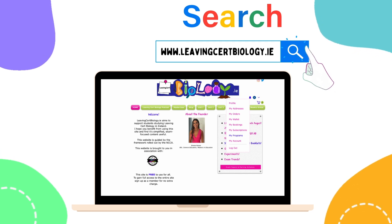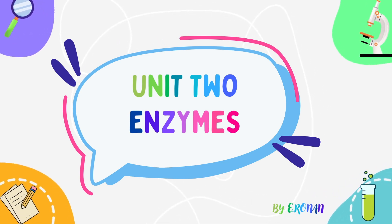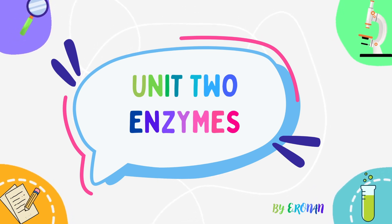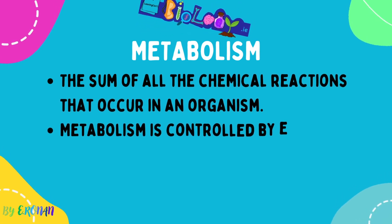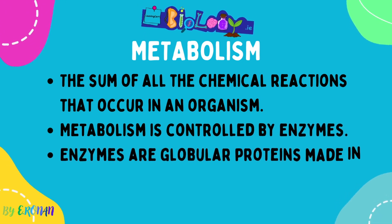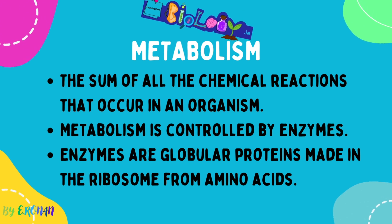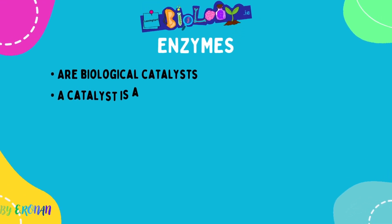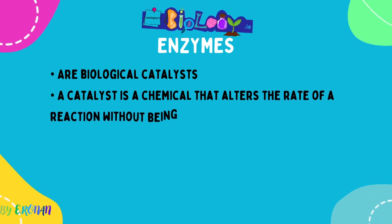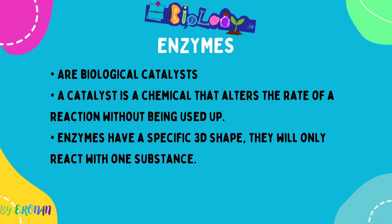For this video we are looking at unit two, chapter enzymes — in my own personal opinion, probably one of the most important chapters on your Leaving Cert Biology course, as enzymes can come up and has come up every single year absolutely anywhere. Starting with the definition for metabolism: metabolism is the sum of all chemical reactions that occur in an organism, and it is controlled by enzymes. Enzymes are globular proteins, made in the ribosome from sequences of amino acids held together by peptide bonds. Enzymes are biological catalysts — a catalyst is a chemical that alters the rate of a reaction without being used up itself. Enzymes have a specific 3D shape, will only react with one substance, and have a unique site called their active site.